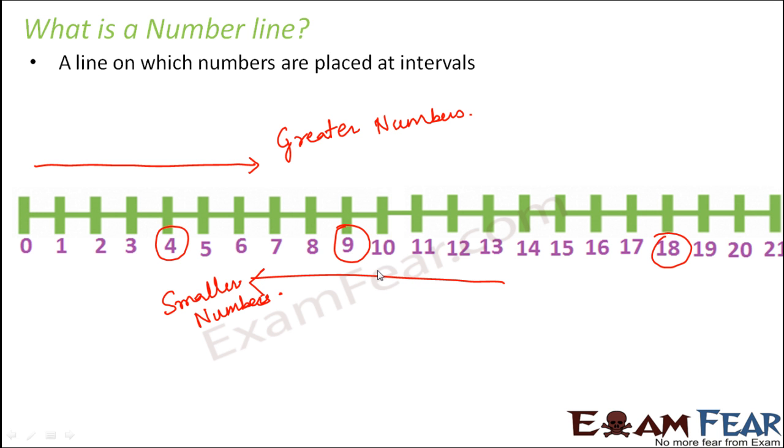Basically, whenever you look at the number line, if you want to find the successor of any number, the successor will always be towards its right. Let's consider the example of 12. The number on the right of 12 is 13, so 13 will be its successor.